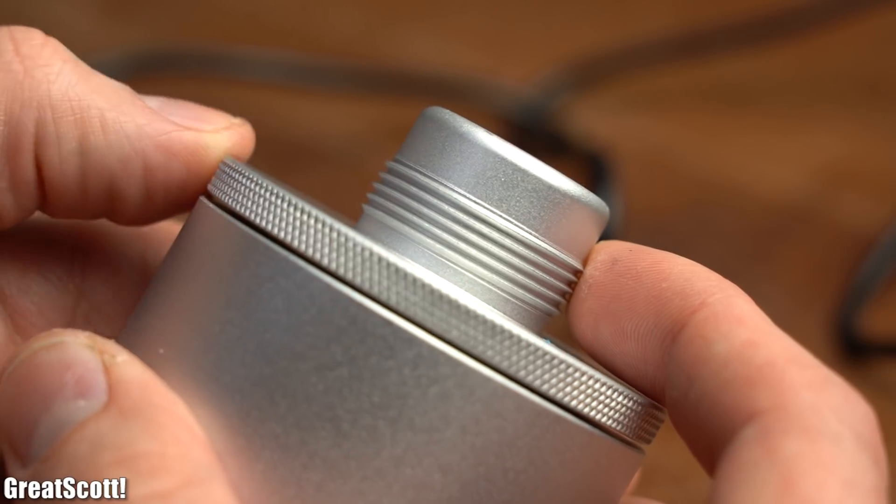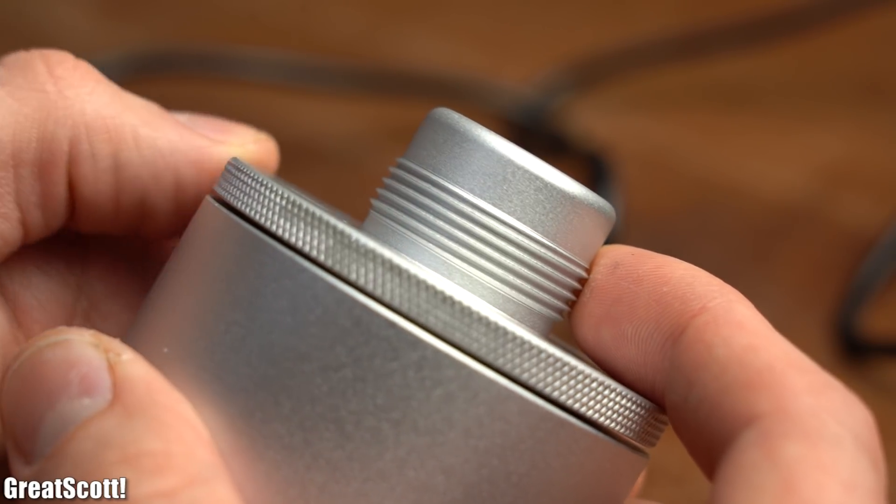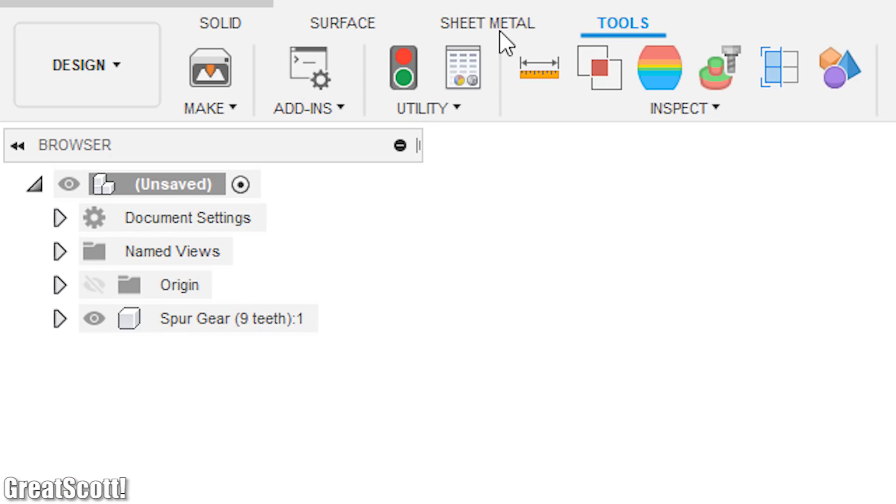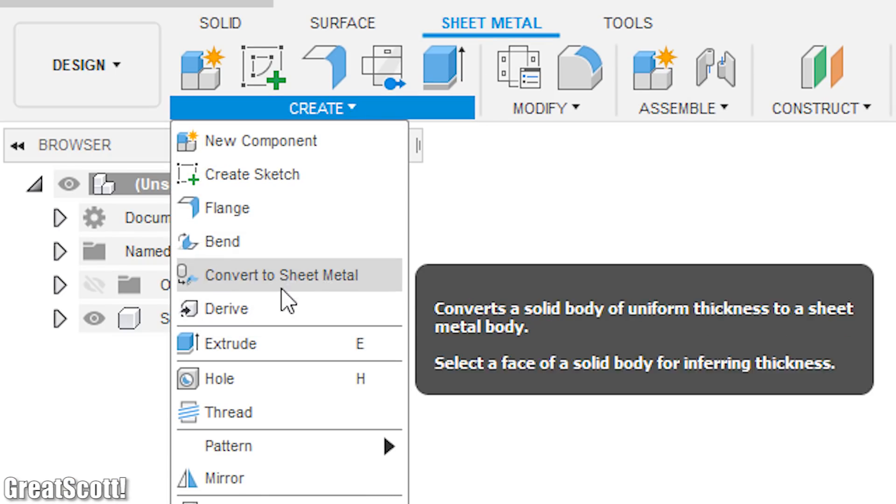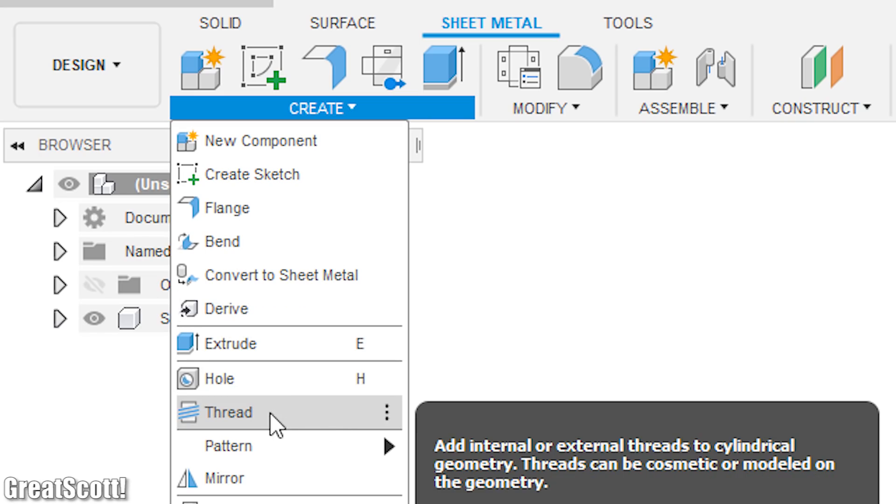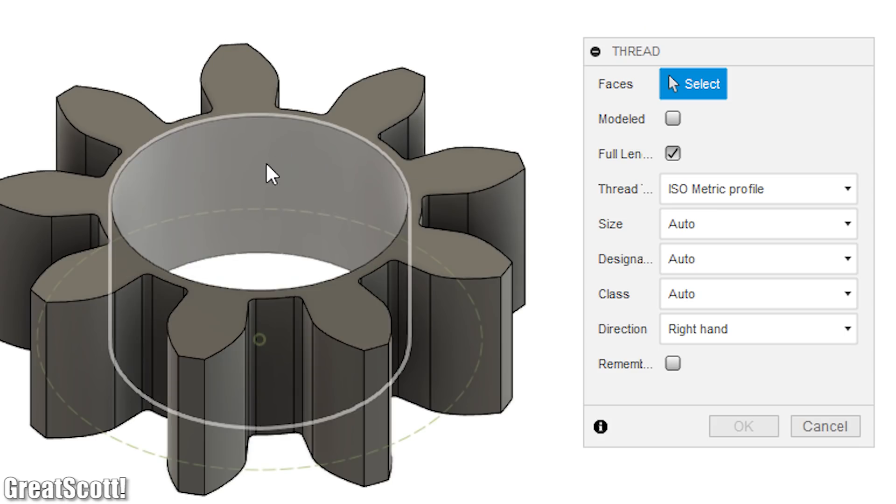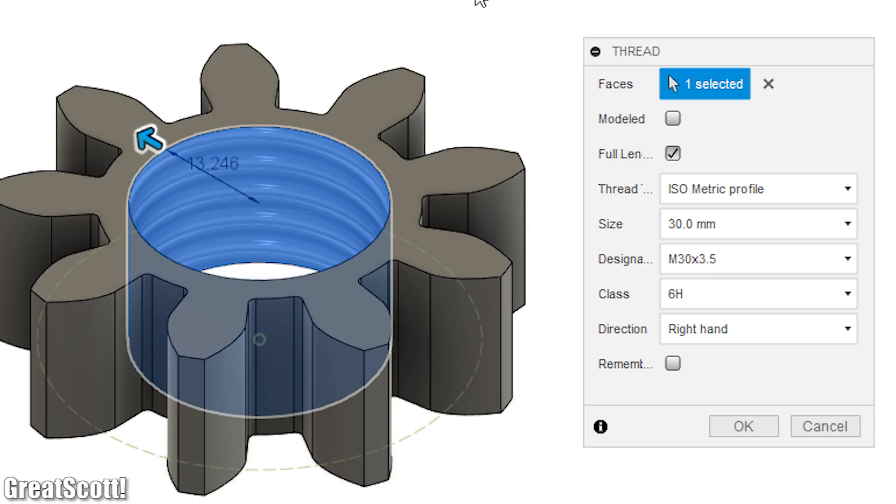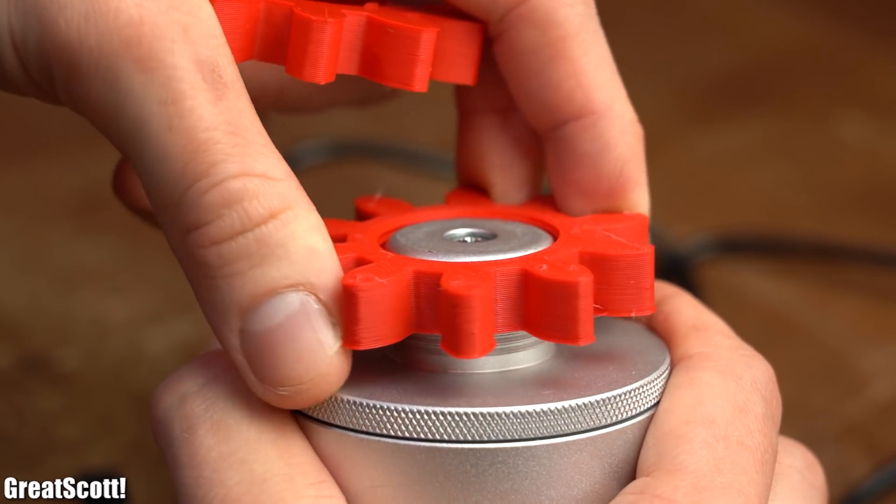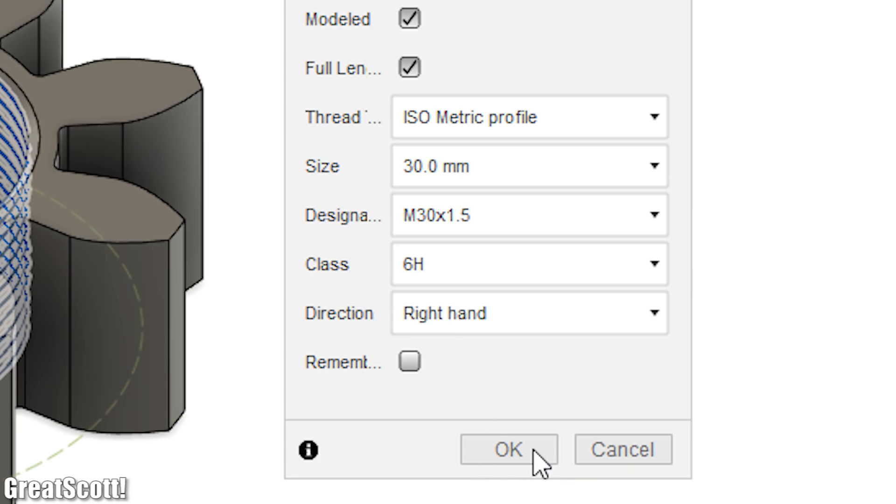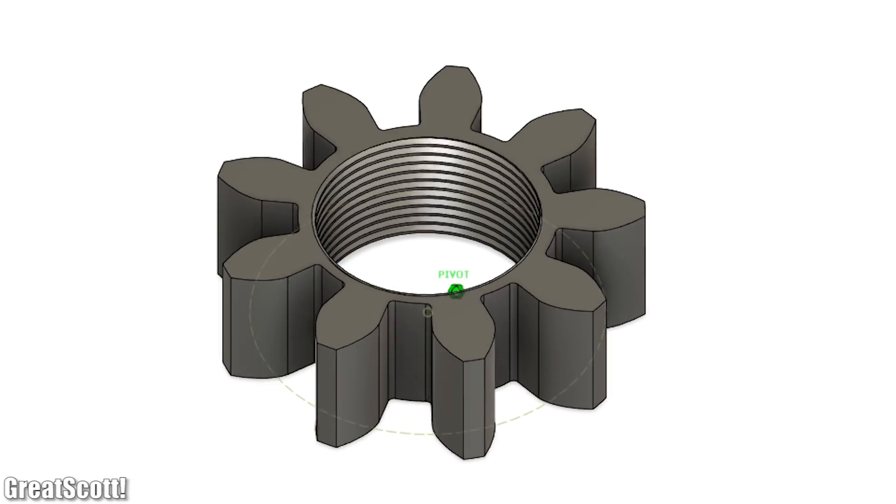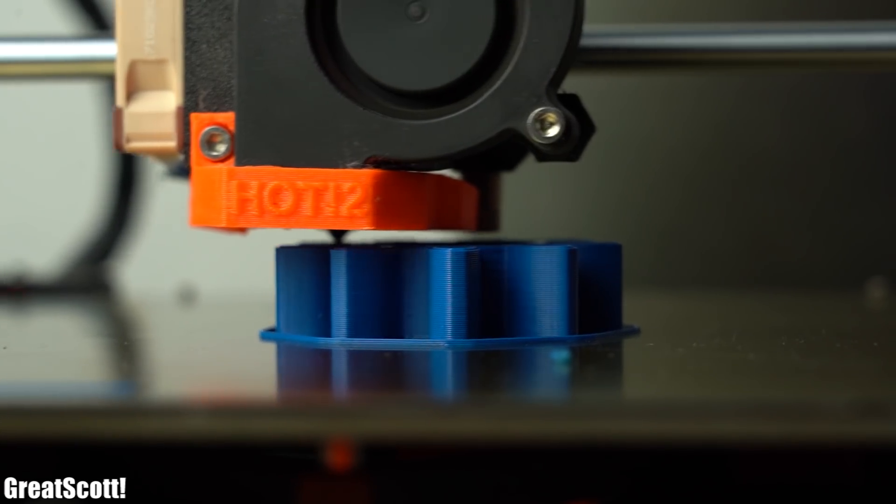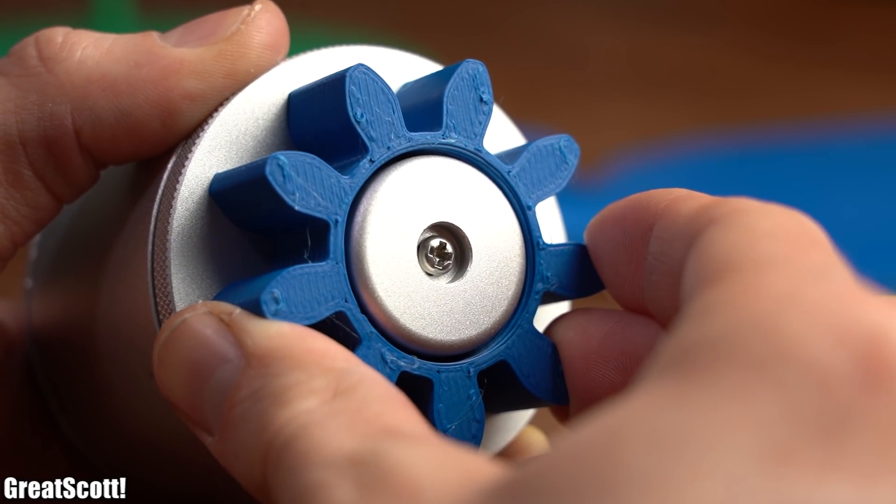Now the generator rotor comes with an unknown thread that we can use. To add such a thread to the gear, I switched over to the sheet metal tab and simply clicked on thread under create. Next I clicked on the gear's inner surface and thus was greeted with the thread settings, which after doing a bit of trial and error turned out to be those. And with that being done, we got our first completed gear, which after 3D printing it fit perfectly onto the generator's rotor.